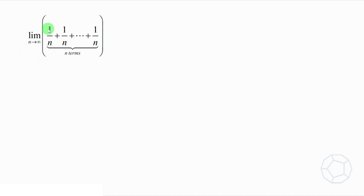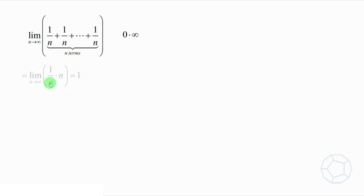We're going to use the following example to explain why this is not the case. Consider the limit as n tends to infinity of 1 over n plus 1 over n, up to 1 over n, where there are n terms inside the bracket. As 1 over n tends to 0 and there are n terms which tends to infinity, we get the form 0 times infinity. However, if we simplify the bracket, we get 1 over n times n, which is 1 — obviously not zero. So we need a more rigorous argument to arrive at the final answer.